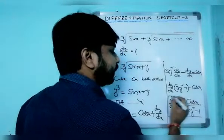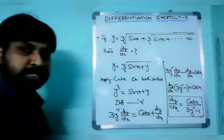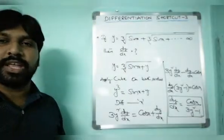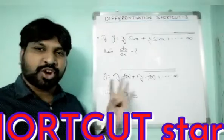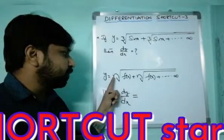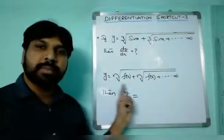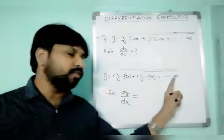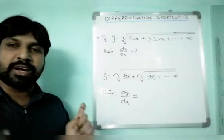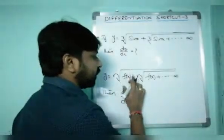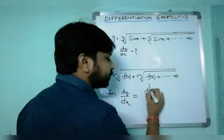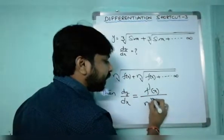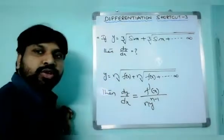So dy/dx equals cos x divided by (3y² minus 1) — that's the answer. Now I want to reveal the shortcut formula. If y equals the nth root of f(x) plus the nth root of f(x) plus so on to infinity, then dy/dx equals f'(x) divided by n times y to the power (n minus 1), minus 1.